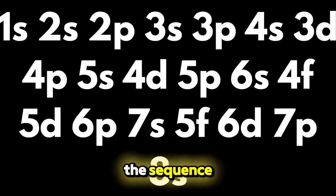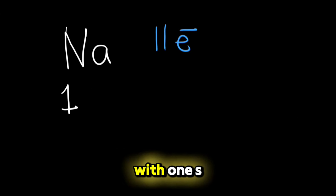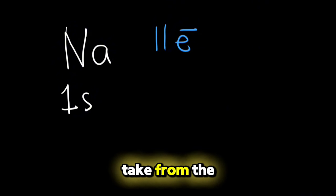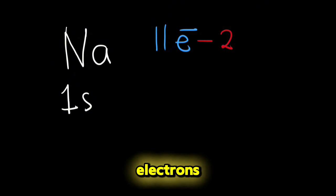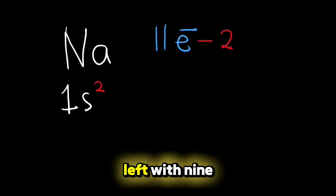So by following the sequence, we will start with 1s. Now as we said before, s can only store two electrons, so we will take from the 11 electrons two electrons and write it over here. So you'll have 1s², and we will be left with nine electrons.